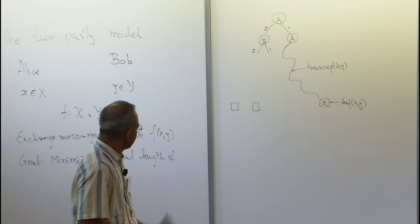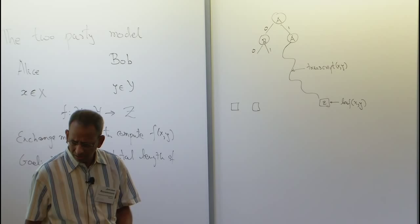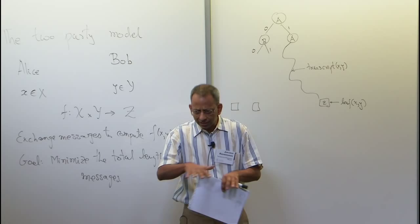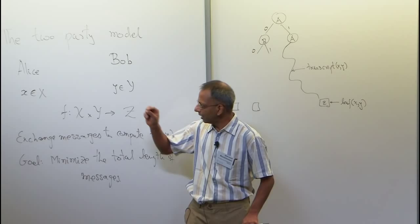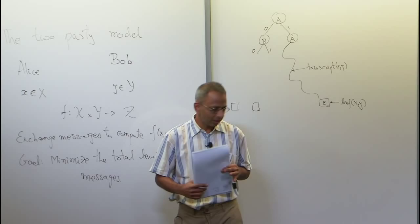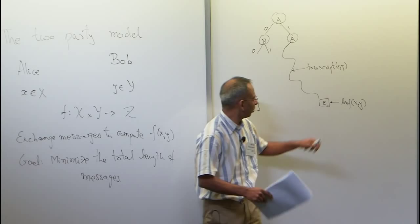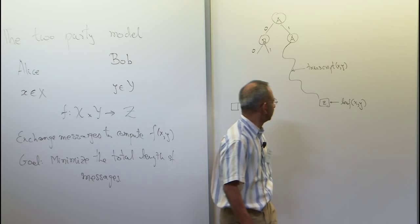Does Alice know what Bob is going to do next? Yes — she has full knowledge of this tree. They both had function f, sat down and built this tree, then went away. Alice was given her x, Bob was given his y, and then they started playing. For every input x and y, the leaf that is reached should contain the correct answer. Only then will we call this a valid protocol for this problem.